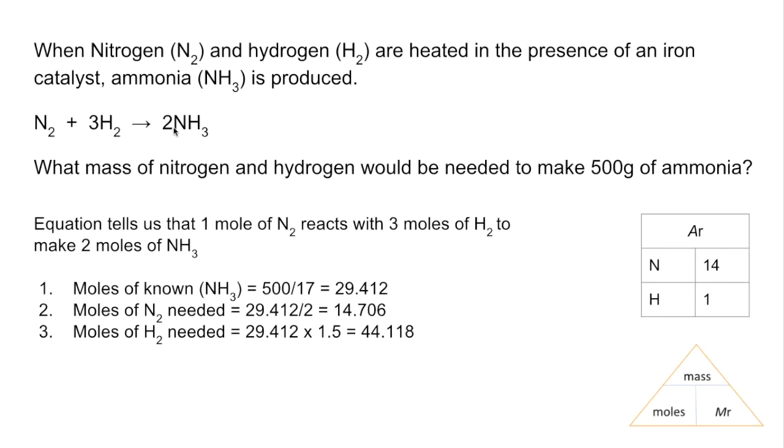Then all we need to do now once we've got the moles, we convert them to mass by moles times Mr. So the mass of nitrogen needed is moles times its Mr of 28, so 411.768 grams. Mass of hydrogen needed: moles of hydrogen times its Mr of 2, so 88.236.